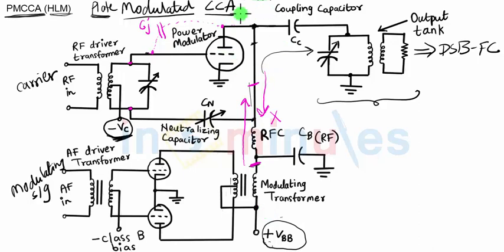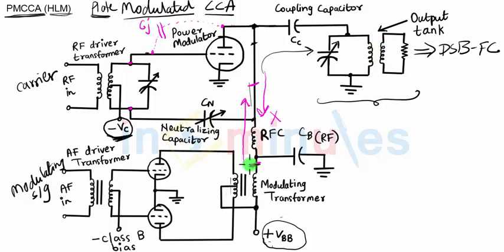High-frequency current pulses will be blocked from going towards the power amplifier side. We want the high-frequency current pulses to go to the output tank circuit so that the final AM signal can be generated. RFC and the capacitor together will block the passage of the high-frequency signal from the plate towards the VBB power supply.